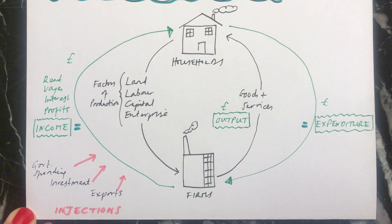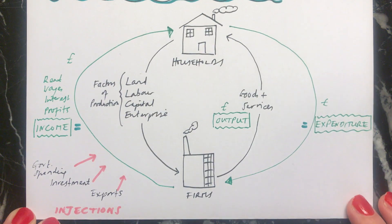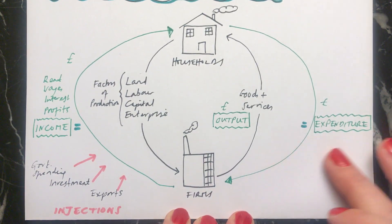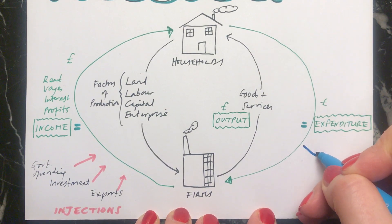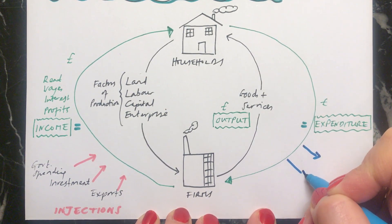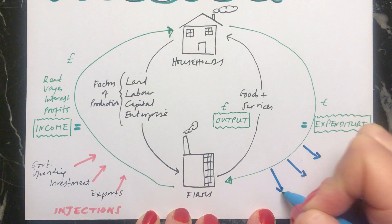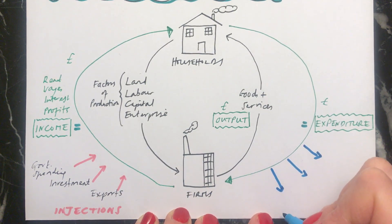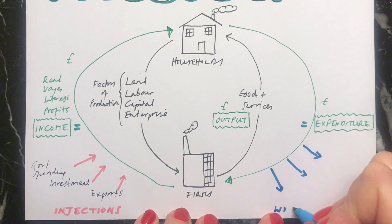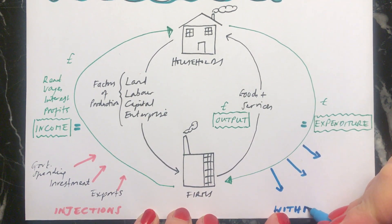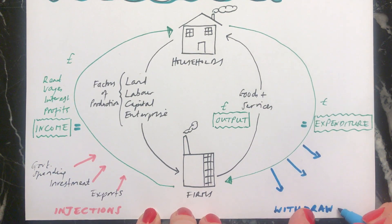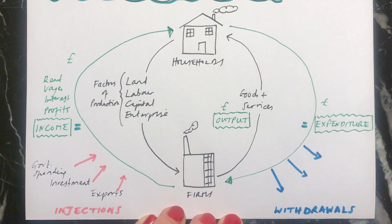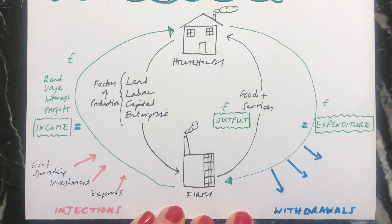So all three injections will add to the amount of money flowing around in the economy, meaning there will be more money flowing around. There is also the factor of withdrawals, sometimes called leakages — these are ways that money can leave the circular flow of income, so the money within the circular flow can decrease.